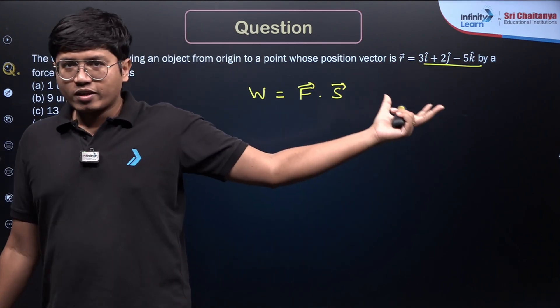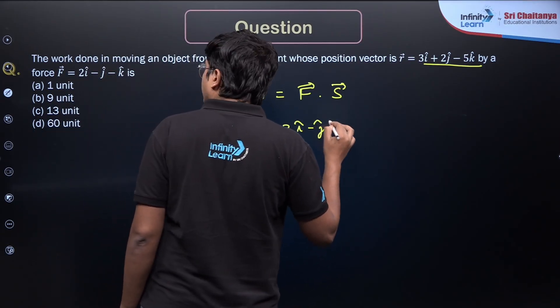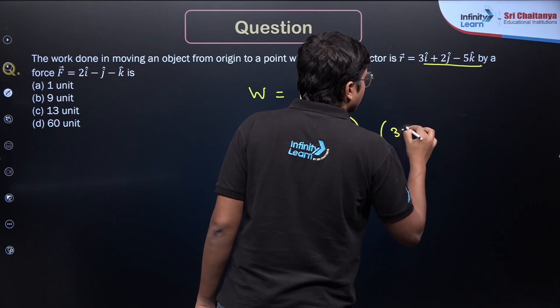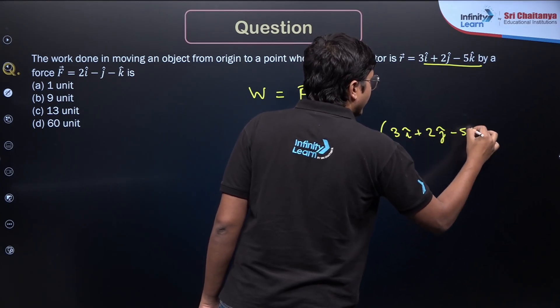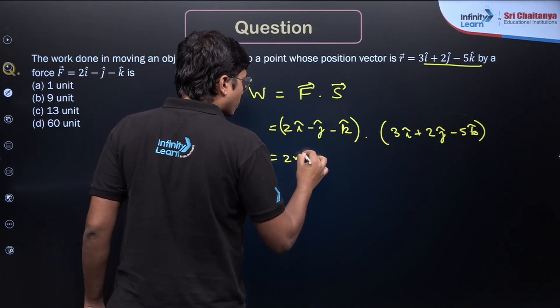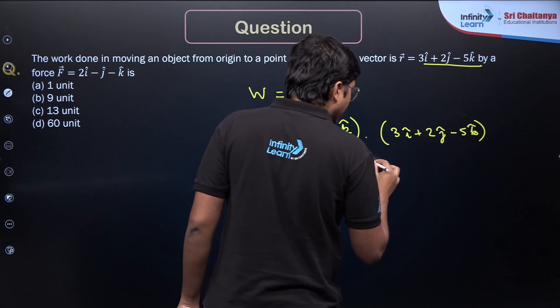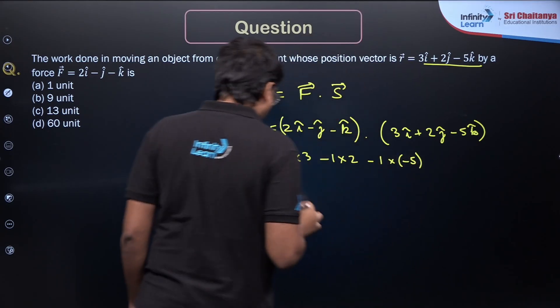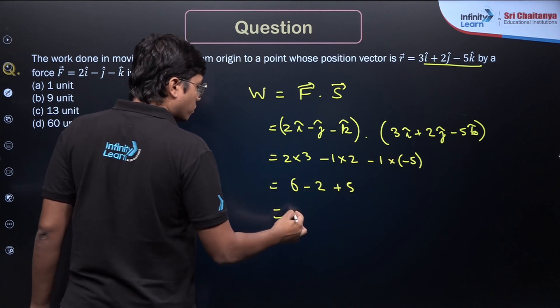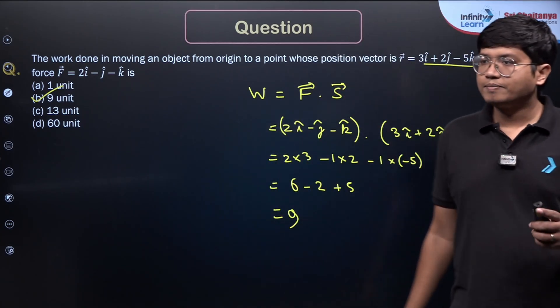It says the work done in moving an object from origin to a point whose position vector is R vector equals 3i cap plus 2j cap minus 5k cap by a force of 2i cap minus j cap minus k cap is how much? So it's quite easy to do. We know work done is force vector dot displacement vector. Now displacement vector is this itself because the starting point is origin. So a vector pointing from the origin to this point is just the position vector. So we can just do the dot product between them. We have 2i cap minus j cap minus k cap, that's the force vector. We do the dot product with 3i cap plus 2j cap minus 5k cap. If I do the dot product, you have 3 times 2, minus 1 times 2, minus 1 times minus 5. You get 6, minus 2, and plus 5. That's equal to 9. So the answer is 9 units, option B.